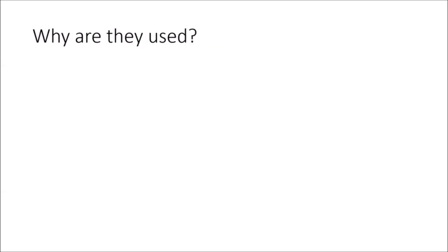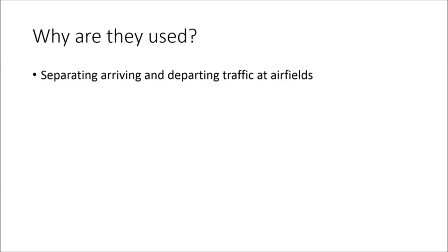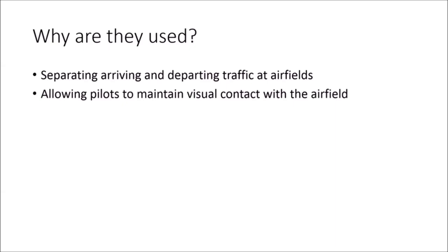Why are traffic patterns used? Traffic patterns are used for several reasons. First, they provide separation between departing and arriving airplanes around an airfield. It's usually very busy, with a lot of airplanes coming to the same place. If everybody just approached the runway however they wanted, there'd be a lot of mid-air collisions. With the traffic pattern, all airplanes use the same route, and all airplanes can easily spot each other because everybody knows where to look. That leads to less mid-air collisions — so it's a safety reason.